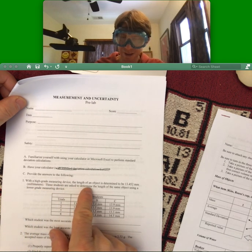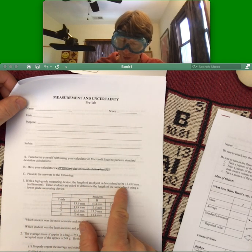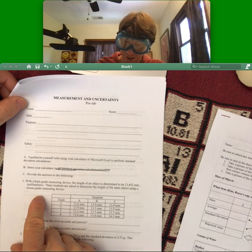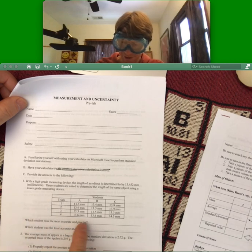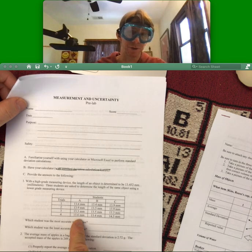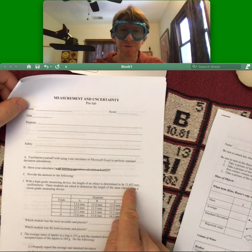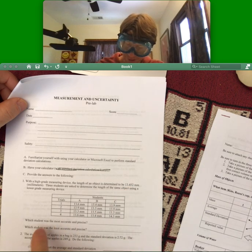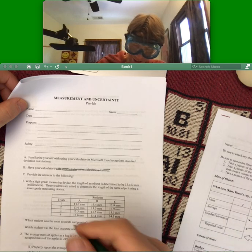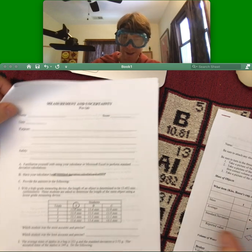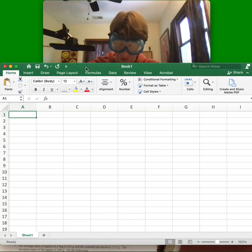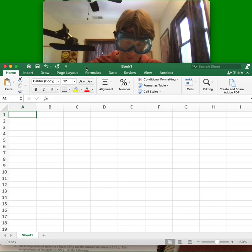With a high-grade measuring device, the length of an object is determined to be 13.452 millimeters. Three students are asked to determine the length of the same object using a lower grade measuring device. It's a lower grade or not as accurate and or precise because it doesn't have as many significant figures in it. Now, which student was the most accurate and precise? Let's do student A together.